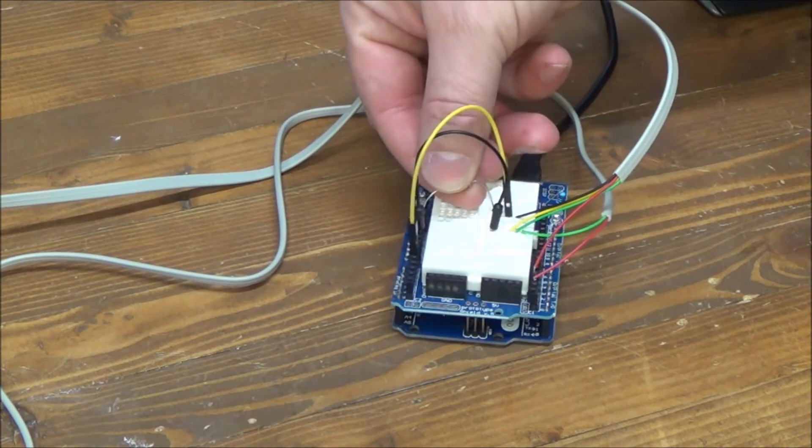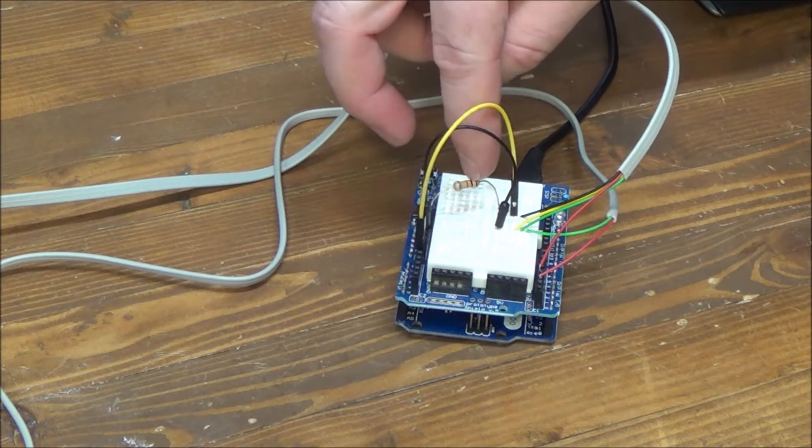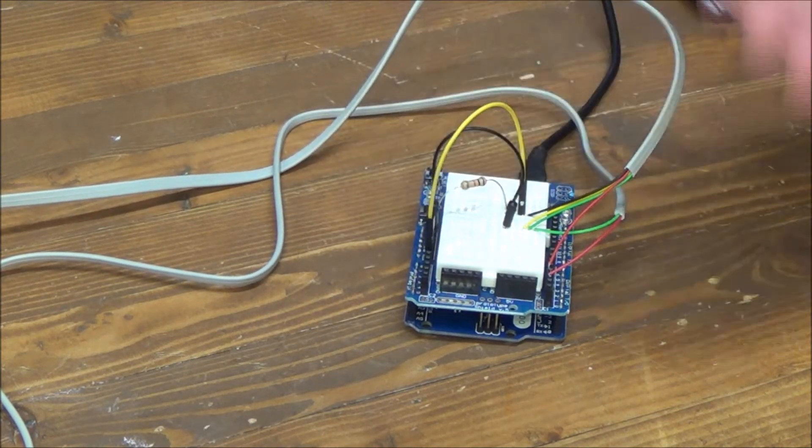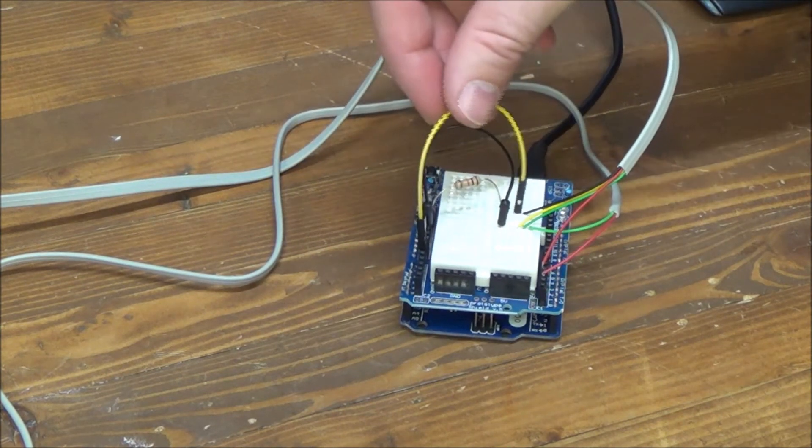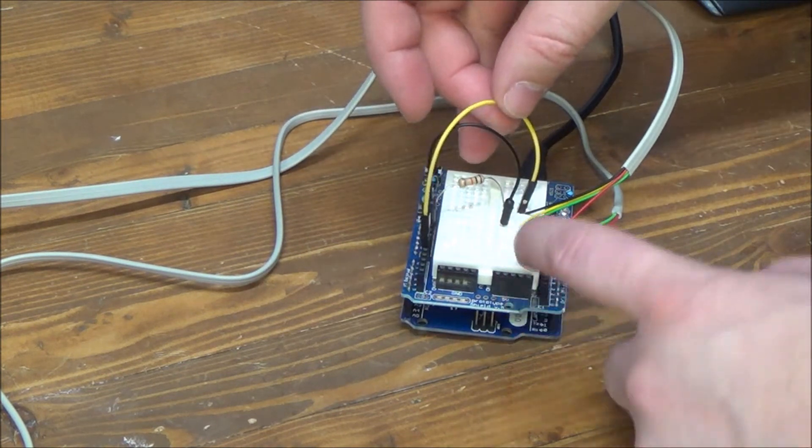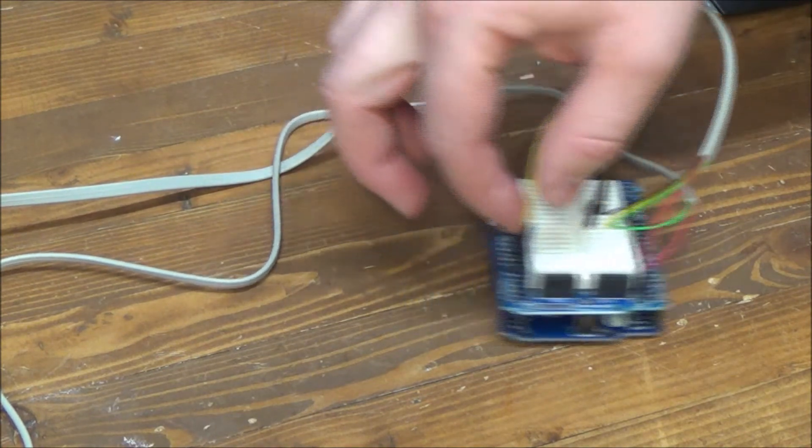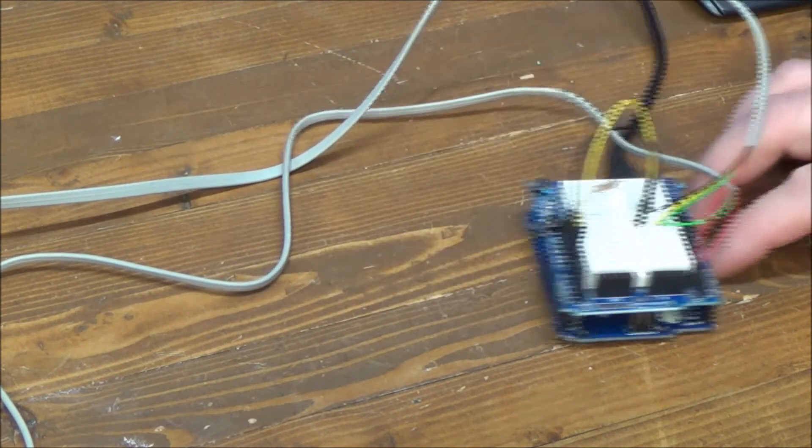Then the outer two wires on this cable are for the wind direction. And the only thing I'm doing here is I'm pulling it up. This is a 10K resistor with 5 volts, so I'm pulling it high. And then, of course, the other side of that is ground. And then this is our signal wire going into analog input 0.